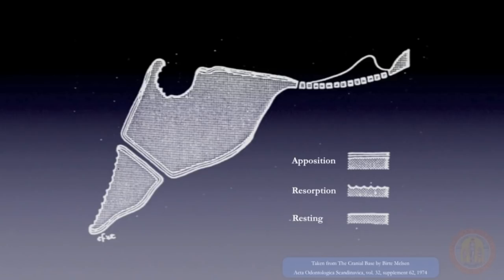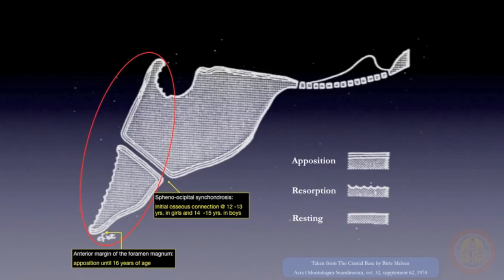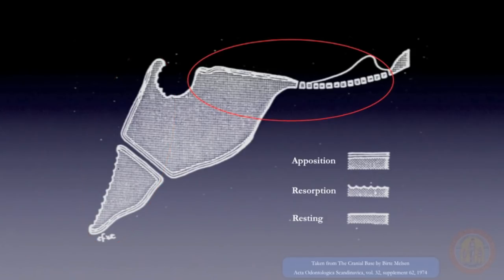Most cranial and cranial-base structures grow or remodel and therefore cannot be superimposed upon. For example, superimposing on the posterior cranial base is problematic due to the growth that occurs throughout childhood and adolescence at the spheno-occipital synchondrosis and the remodeling that occurs on the surfaces of the occipital and posterior sphenoid bones, including the posterior wall of sella. In the anterior and middle cranial base, there are also a number of structures that have been shown to exhibit little or no growth after seven or eight years of age, when the sphenoethmoidal synchondrosis ceases to grow.